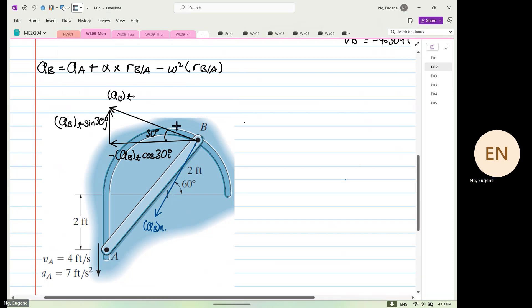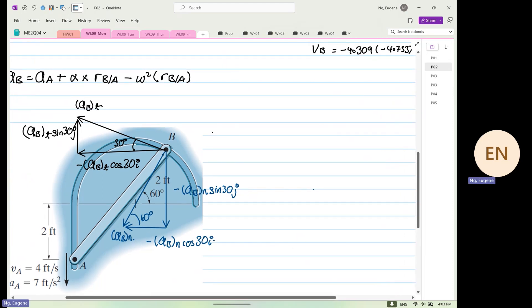So from here, again, watch where your sine and cosine are. I know it's simple high school stuff, but this is where mistakes are made. So we are aware that this is 60 degrees. So this will be equal to minus A B N sine 60 J, and this will be minus A B N cos 60 I. So from here, we're going to form the equation.